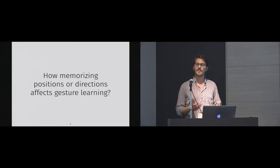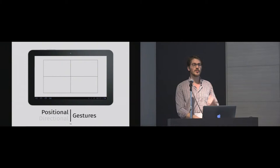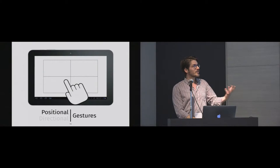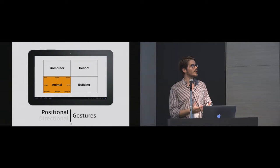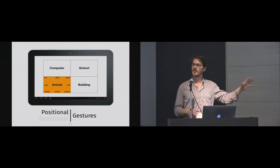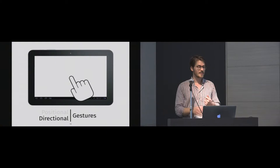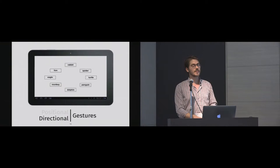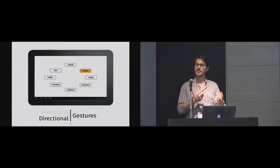For that, we built two interaction techniques. The first uses pointing — positional gestures — where the user selects a menu by triggering the novice mode to display the commands, then raises a finger to select a menu, and points on a command inside it. The second technique uses directional gestures, where the user performs a directional gesture to select a menu, then another to select the command inside. Both techniques use two dimensions — positions or directions — to memorize.